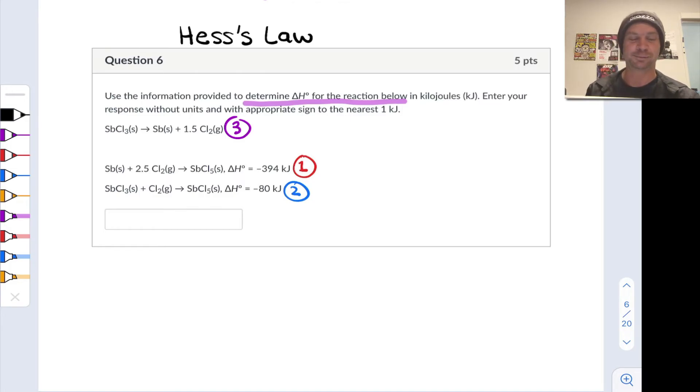To get started with these Hess's law problems, I always look for reactants or products that only show up in one of the series of known reactions. For example, SbCl3 shows up only in reaction two, and it's on the reactant side in reaction two exactly where we need it, and it's at the scale we need. One mole of SbCl3 in the target reaction and one mole in reaction two.